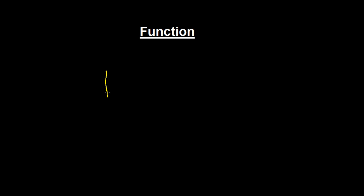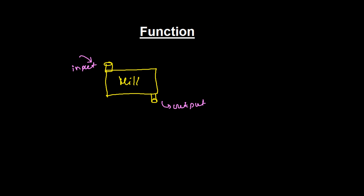To understand functions, let me show you an example. Everyone has seen a mill — you can call it a machine or a mill. There is an input section and an output section. If you put wheat in, the mill gives you wheat flour. Similarly, if you put in corn or maize, you get maize flour. This is a very simple example of a function.